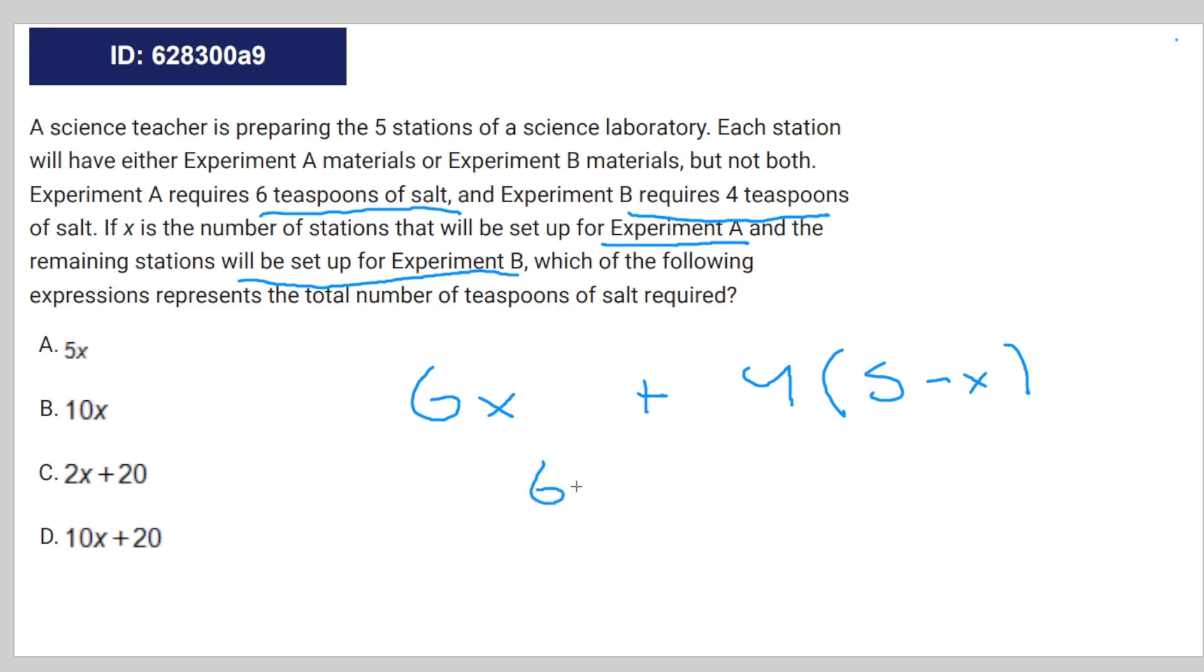You can rewrite it like this: six X plus four. It's the exact same. You can rewrite it like this rather: six X plus 20 minus four X. And if you rewrite it like this, you get two X plus 20, which is the same thing as answer choice C.